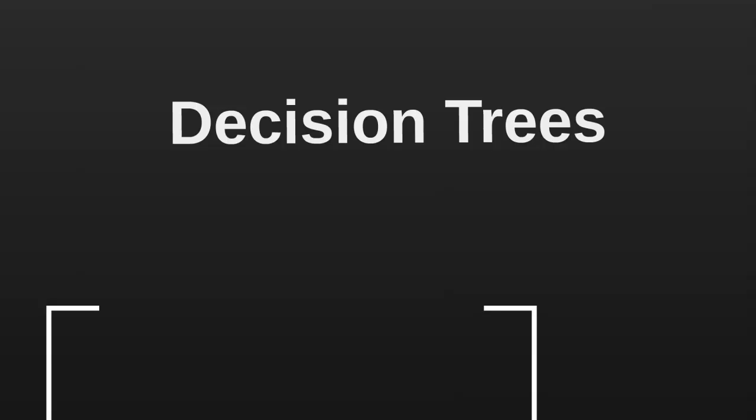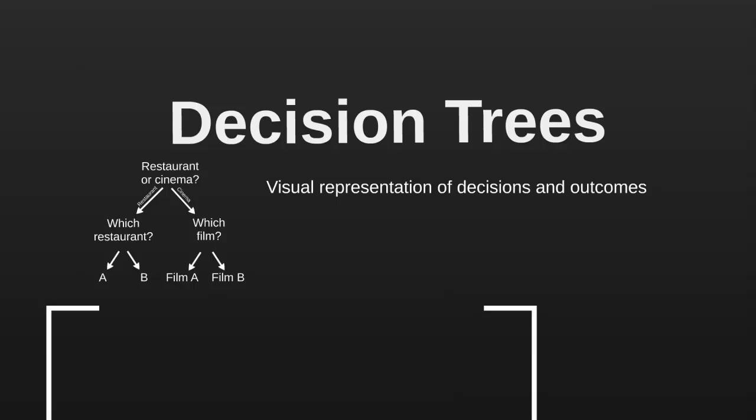Hello and welcome to this Estranity YouTube video on decision trees, which is a concept that comes up in both P1 and P2 of the CIMA syllabus. A decision tree is a visual representation of the decisions that we can make in a given situation, and also the outcomes associated with these decisions.